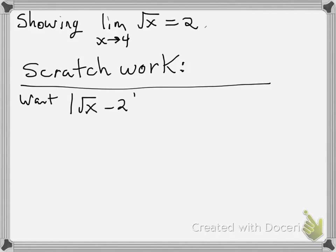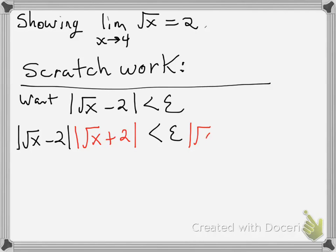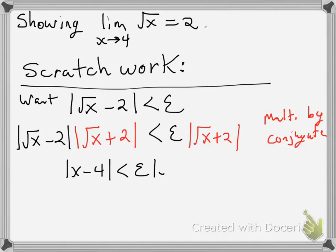So we're going to start out with what we want. We want the square root of x minus 2, that's the distance between the function and its limit, is less than epsilon, which means it's very close together. And what we're going to do, what we did in class, was we multiplied both sides of this inequality by the conjugate. And that will condense down into |x - 4|, and that's going to be less than epsilon times |√x + 2|.